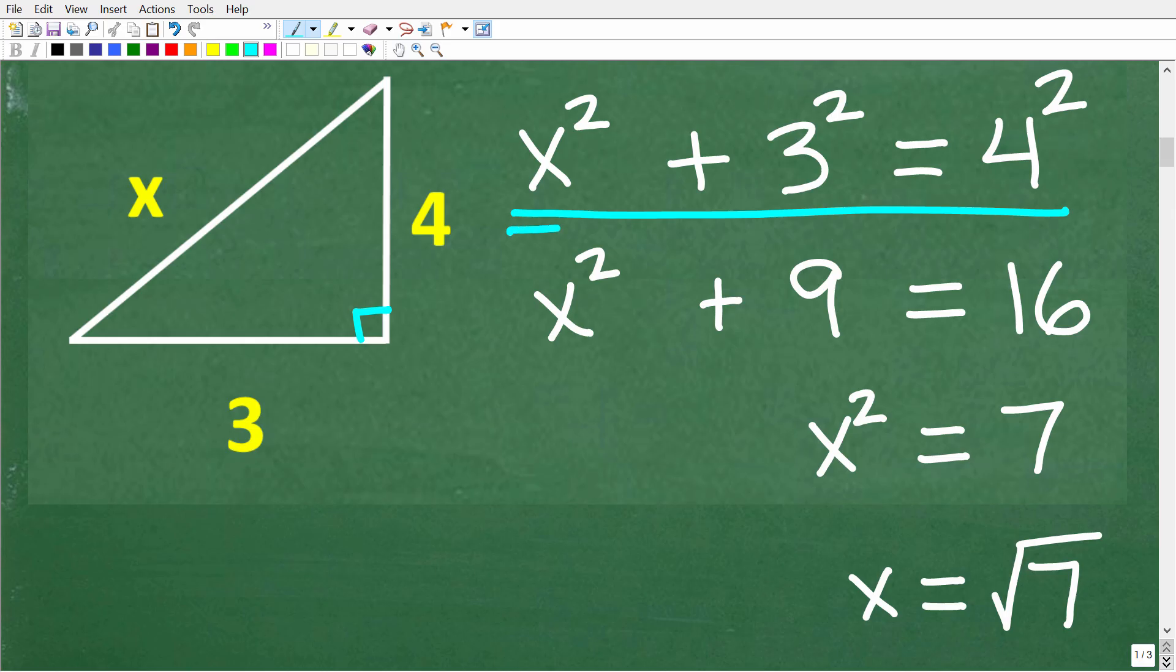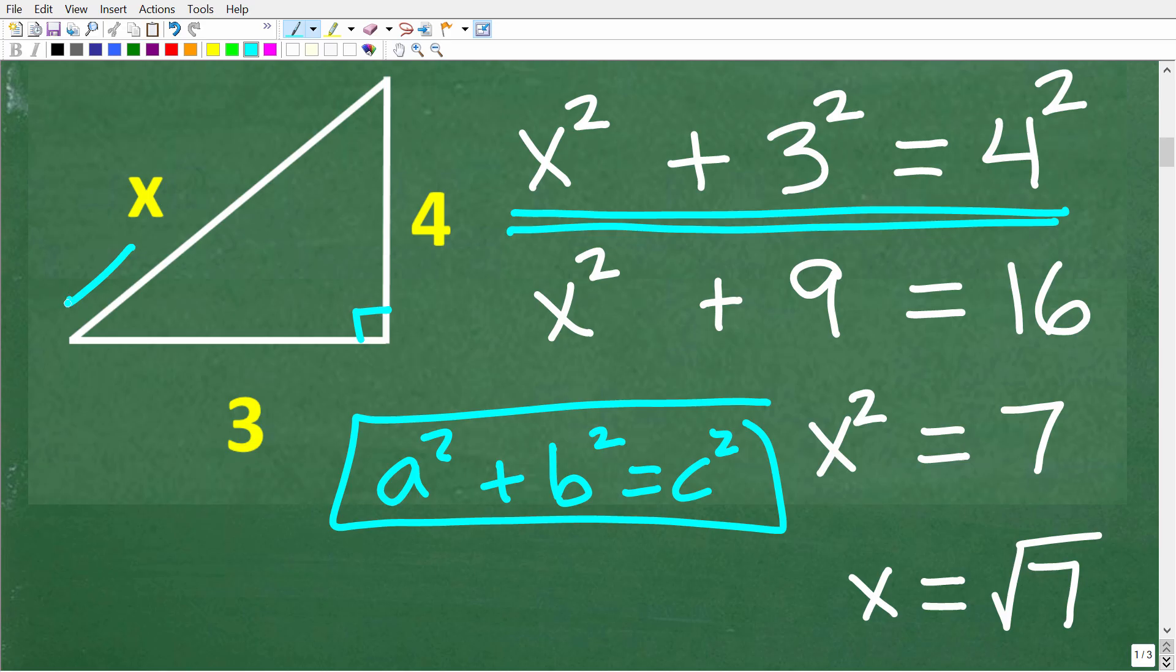Okay, we still have a problem here because the Pythagorean Theorem, again, a squared plus b squared is equal to c squared, would be the correct theorem to use to solve for this length right here. But this side right here, x, the longest side of a right triangle is called the hypotenuse, and it's opposite of the right angle, and it's always c in terms of the Pythagorean Theorem.